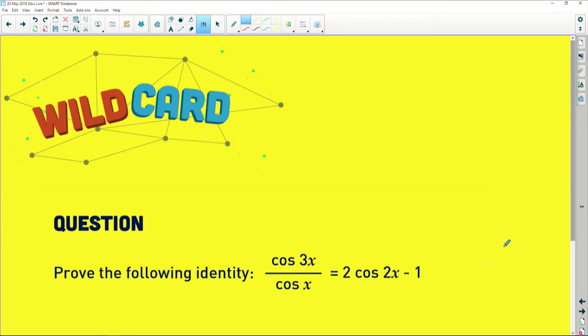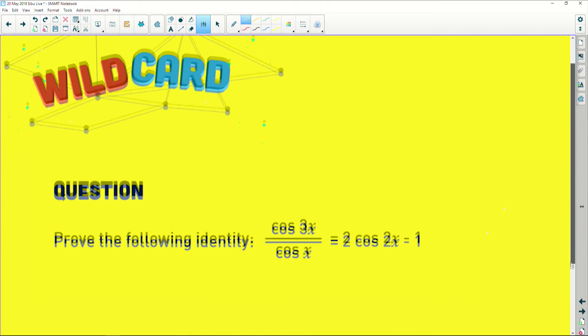So now let's go and check out what this Wild Card is saying to us. It says to us that we need to prove that the cos of 3x divided by the cos of x is the same as 2 cos 2x minus 1.